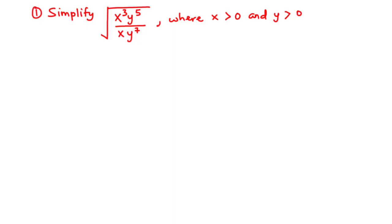As we prepare for the upcoming NOVDECK core mathematics paper, we are going to solve three questions on indices. The first question is NOVDECK 2010 question 9a: simplify the square root of x cubed times y exponent 5, divided by x times y exponent 7, where x is greater than zero and y is also greater than zero.